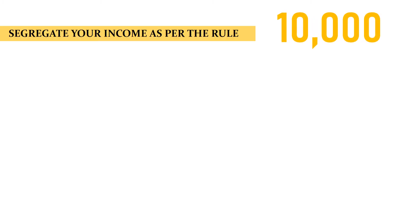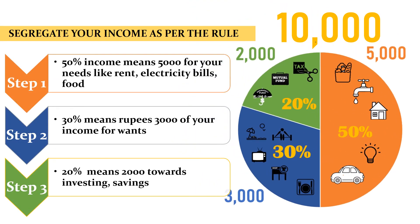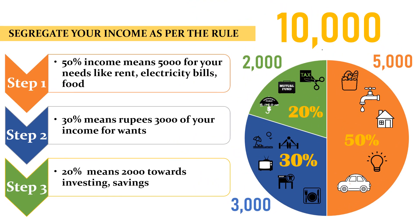For example, suppose your income is 10,000 rupees — segregate your income as per the rule. Step 1: allocate 50%, meaning 5,000 rupees, for your needs like rent, electricity bills, food, etc. Step 2: allocate 30%, meaning 3,000 rupees, for your wants. Step 3: put 20%, meaning 2,000 rupees, towards investing and savings.